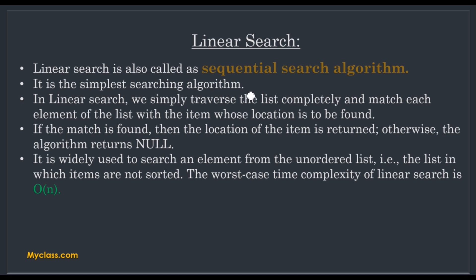In linear searching, the technique is we simply traverse the list completely and match each element of the list with the item whose location is to be found. We travel through the array from first to last, checking each element to see if it matches our search item. If the match is found, the location is returned; otherwise the algorithm returns null. This sequential search method is widely used for searching an element from an unordered list.